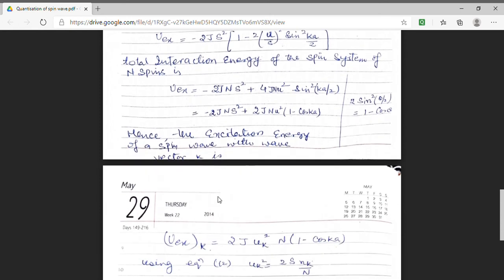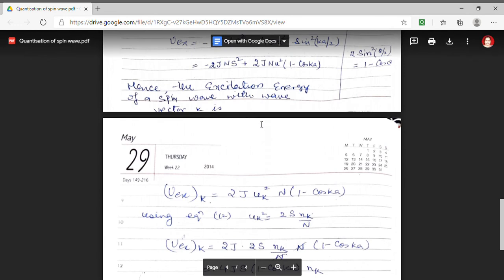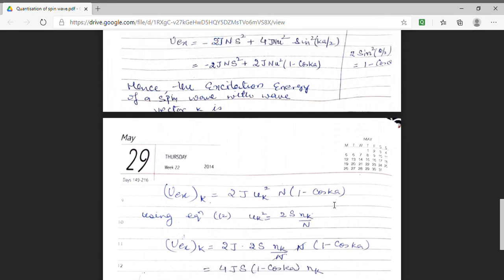So as we know, if we have two spins which are aligned parallel, the energy will be equal to minus 2j ns square. Hence, the energy change, that means the excitation energy of a spin wave will be denoted by this factor, which is 2j nuk square 1 minus cos Ka. And we have already found out the value of uk square to be 2s nk upon capital N.